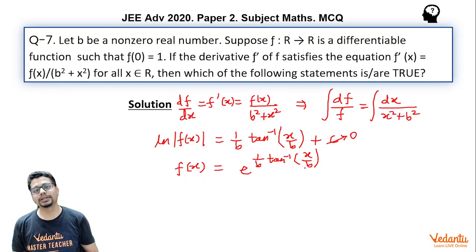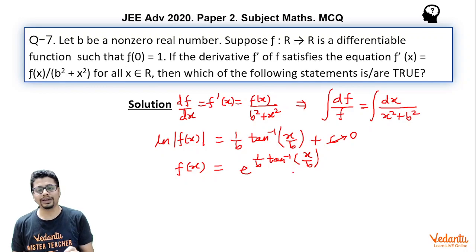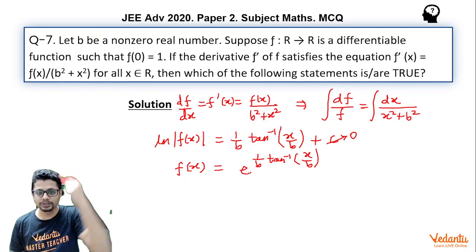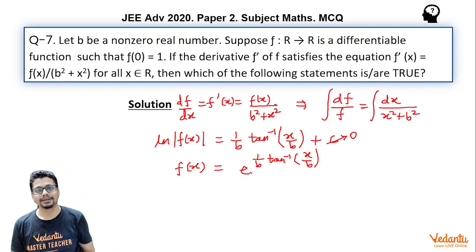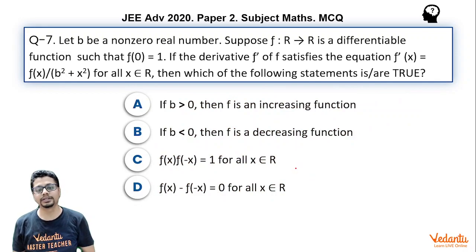You might also ask: what if f(x) equals the positive exponential for some x and the negative exponential for others? That's not possible because f(x) is differentiable and hence continuous. If f switched from positive to negative exponential at some point, there would necessarily be a discontinuity there, contradicting differentiability.